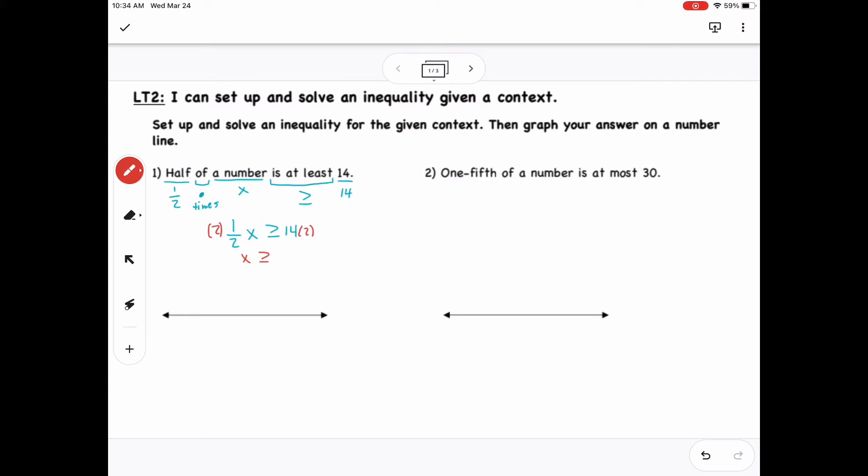And then I want to solve. So I'll multiply both sides by 2, which gives me x is greater than or equal to 28. And then from there, it's pretty simple, so graph your 0 and 28, 28 is on the right side of 0, and because we're greater than or equal to, we draw our line closed circle to the right. For number 2.